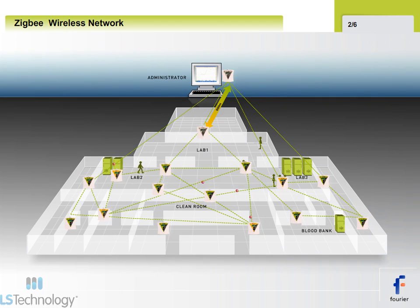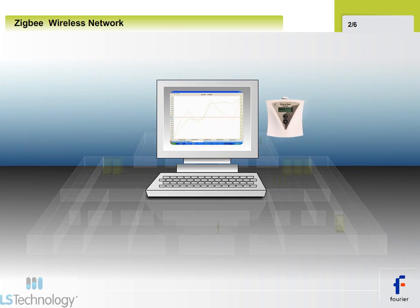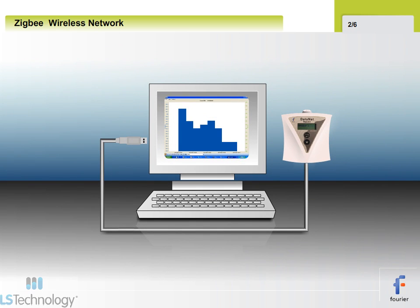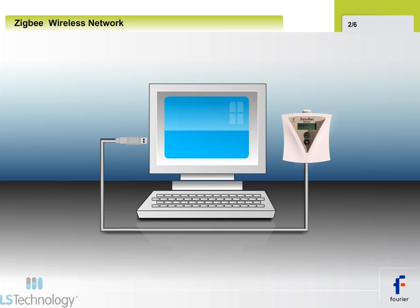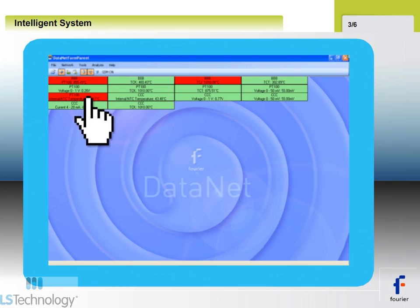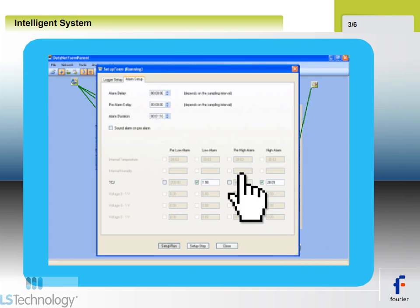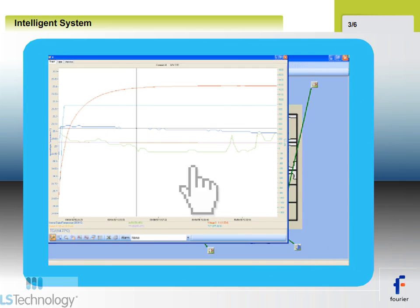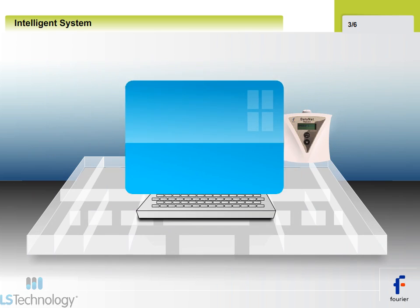The system works as an intelligent network, each unit communicating with its neighbours. All that's needed to get started with the Datanet system is a repeater receiver. This acts as the gateway to the PC and connects via the USB port. The software has multiple views, which include tab view, map view and graph view.